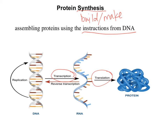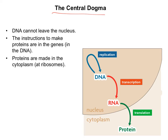In the process of transcription, we're going from DNA to RNA and making an RNA message out of DNA's instructions. And in the process of translation, we're going from RNA to protein. The central dogma states that we have this flow of information. We start with the directions, which are DNA, and they're held in the nucleus. They cannot leave the nucleus for any reason, and this is to protect the DNA.